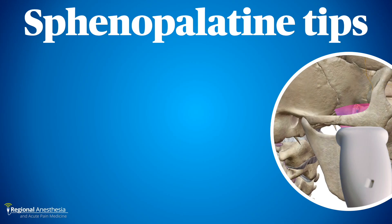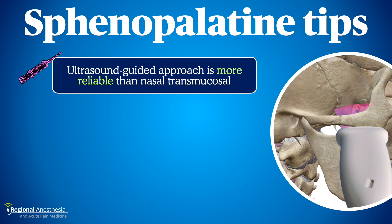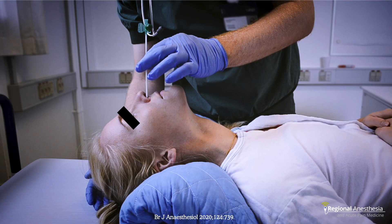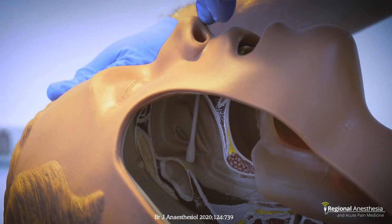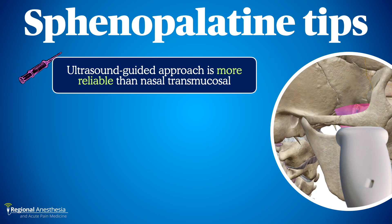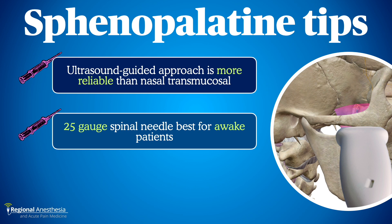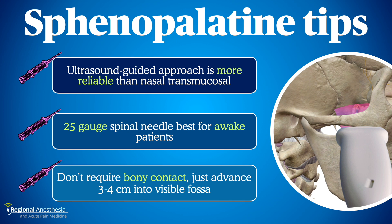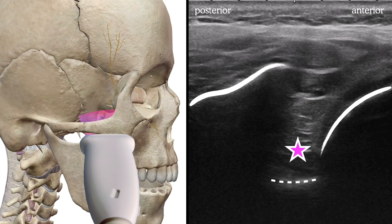A few SPG tips: A common alternative approach is to drip local anesthetic onto the posterior nasal mucosa to reach the pterygopalatine fossa via the sphenopalatine foramen, but the data is not reassuring — it's likely too far and too narrow for local anesthetic to reliably reach the SPG. We advocate for the simple ultrasound-guided technique. Use a small-gauge needle in awake patients; a 25-gauge spinal needle is sufficient since it's a straight shot. In anesthetized patients, a 21-gauge blunt-tip block needle provides good haptic feedback. Finally, while the lateral pterygoid plate is a good safety backstop, it's uncomfortable to hit — just advance three to four centimeters into the fossa and let your local anesthetic spread from there.